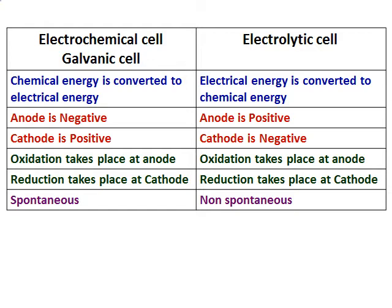In an electrochemical cell, the anode is negative, whereas in an electrolytic cell, the anode is positive. An electrochemical cell has a positive cathode and an electrolytic cell has a negative cathode. In both cells, oxidation takes place at the anode and reduction takes place at the cathode. An electrochemical cell involves a spontaneous reaction, whereas an electrolytic cell involves a non-spontaneous reaction made to occur due to the passage of electric current.